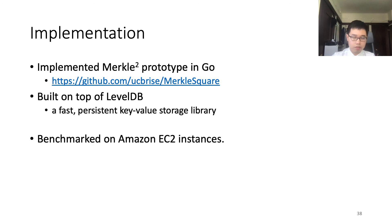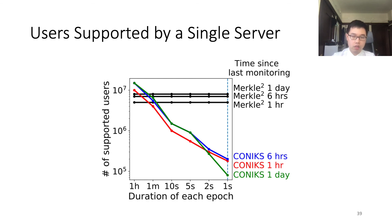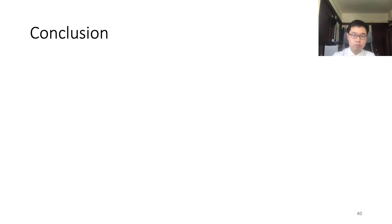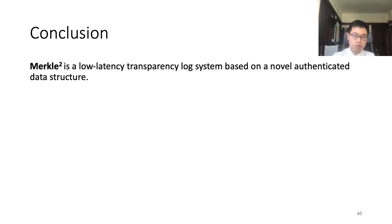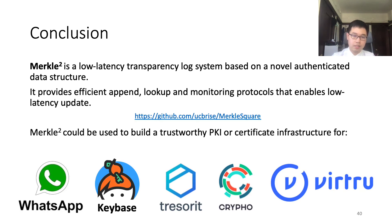Finally, let me give some evaluation results. We implemented Merkle Square using the Go language and benchmarked it on Amazon EC2 instances. We compare Merkle Square with Coniks according to how many users can be supported by a single server under a real-world workload. It turns out that Merkle Square's performance is not affected by the epoch interval. When the epoch interval is one second, Merkle Square can support 100 times more users than Coniks. In conclusion, Merkle Square is a low-latency transparency log system built on top of a new authenticated data structure, and its technique can be used to build a trustworthy PKI or certificate infrastructure for many encrypted systems. Thank you.